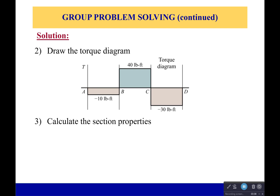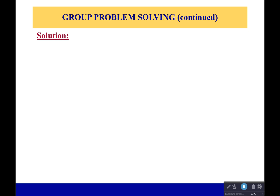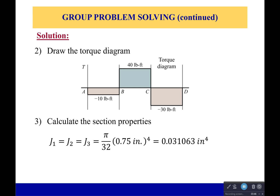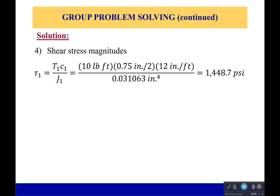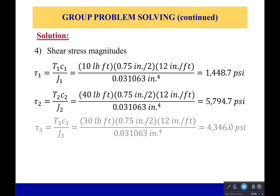Now having done that, we need to calculate the section properties. Luckily the cross-section is constant, so the polar moment of inertia will be the same for all sections. It's pi over 32 times the diameter to the fourth, giving us 0.03106 in⁴ for a diameter of 0.75 inches. Since all sections have the same radius and polar moment of inertia, the section with the maximum shear stress will be the one with the maximum torque — that's section two.